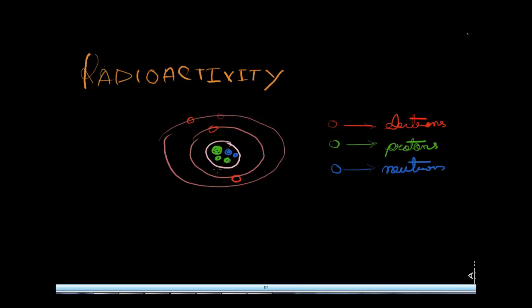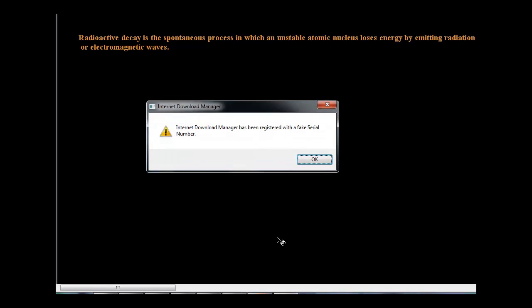Now that the intro part is over we will try to look at radioactivity more technically. So now let us try to define radioactivity first. We can say that radioactivity or radioactive decay is the spontaneous process in which an unstable atomic nucleus loses energy by emitting radiation in the form of electromagnetic waves or particles.